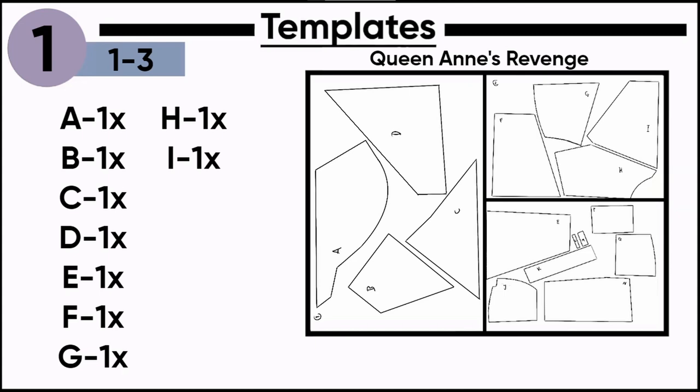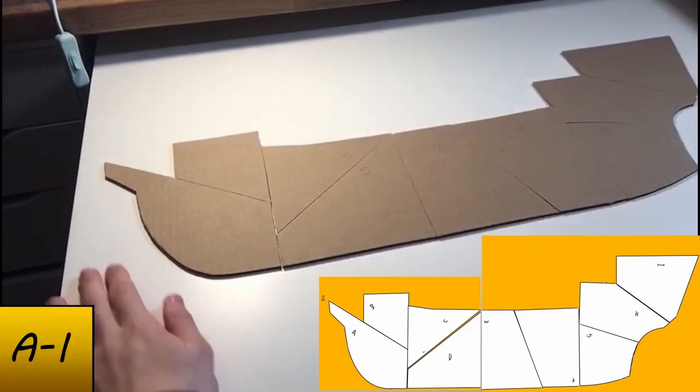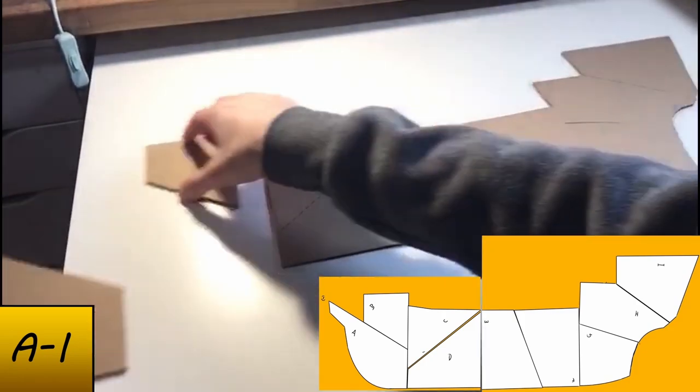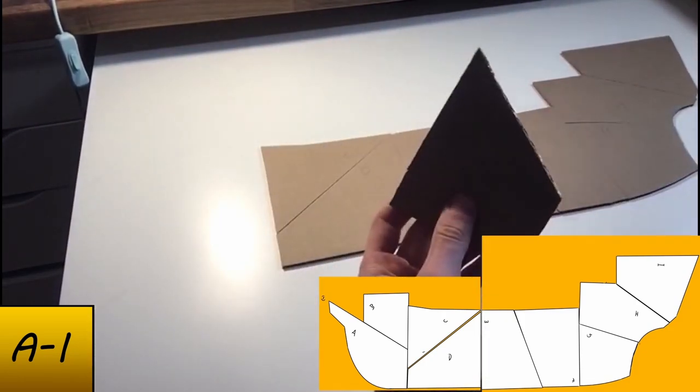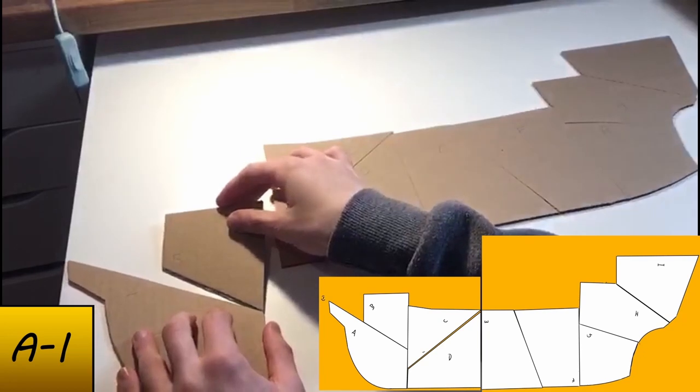For the first part, we need pages 1, 2, and 3. Start with the skeleton of the ship. Glue the parts A to I together in this order. This is the cross-section we need.